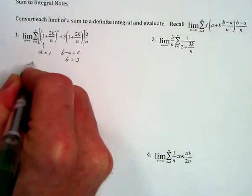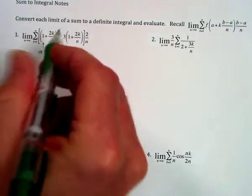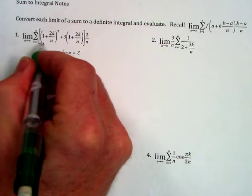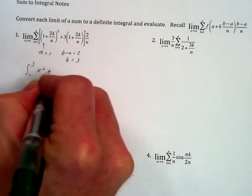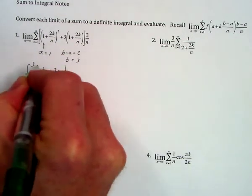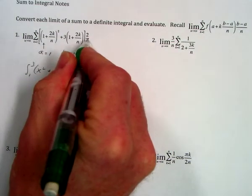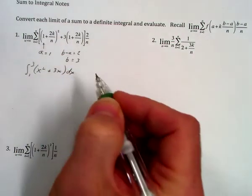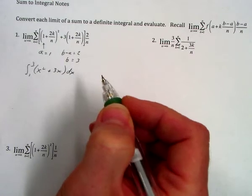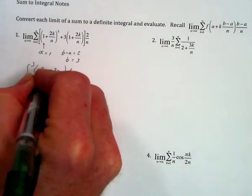We're going to go from 1 to 3. Now what's our function? This is our x value, so it's x squared plus 3x, and we're multiplying that by delta x, which as that goes to zero becomes dx.